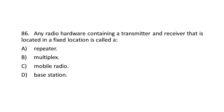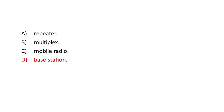Question 86. Any radio hardware containing a transmitter and receiver that is located in a fixed location is called a: a. Repeater. b. Multiplex. c. Mobile radio. d. Base station. The answer is d: Base station.